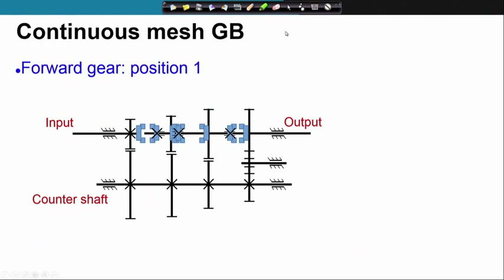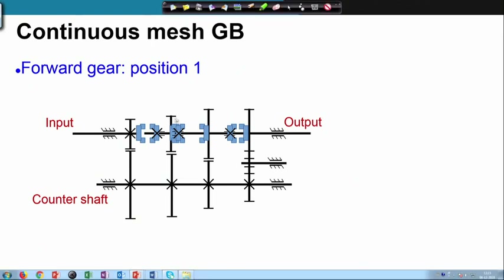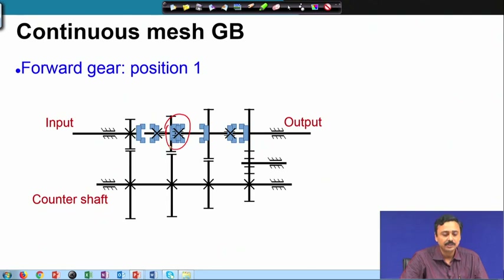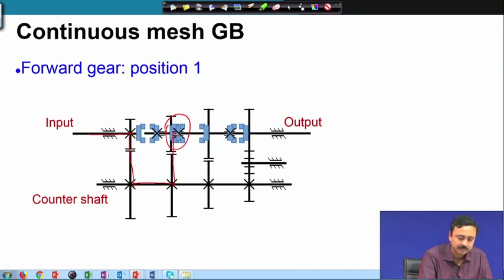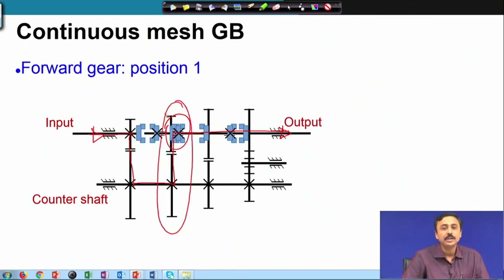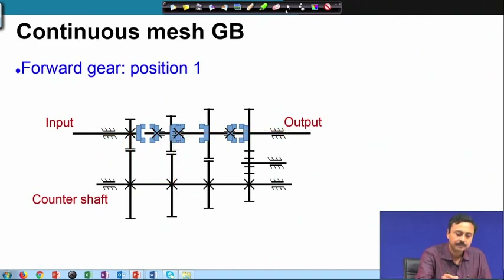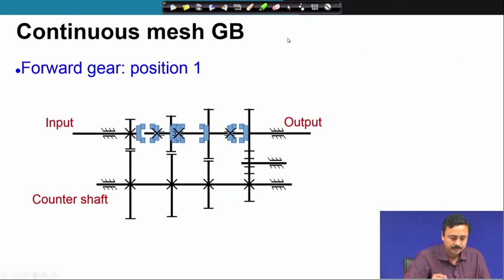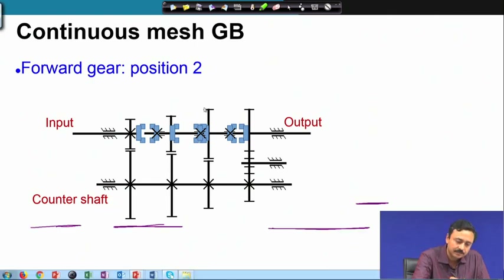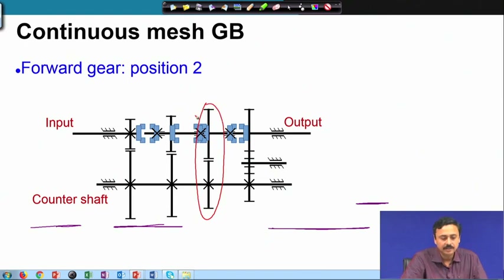Let us look at forward gear position 1. Here is the engagement of the dog clutch, and therefore our transmission path follows this route. The transmission ratio of this gear pair decides the net transmission ratio. When you put the dog clutch in position 2, you slide it to the right and engage this gear pair, meaning this gear is now connected to the shaft.